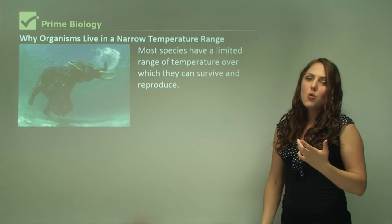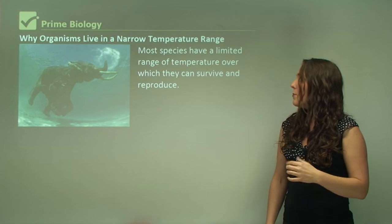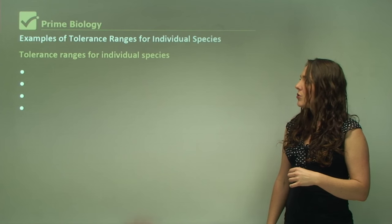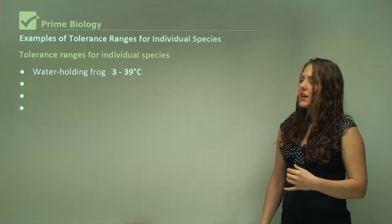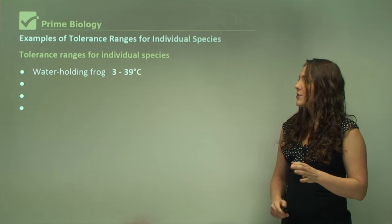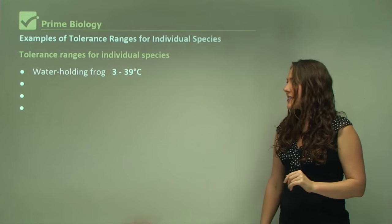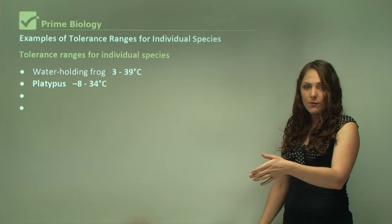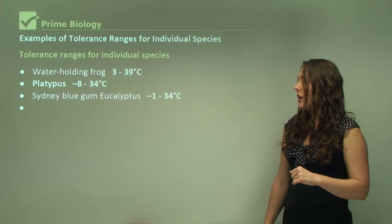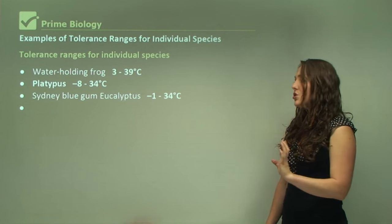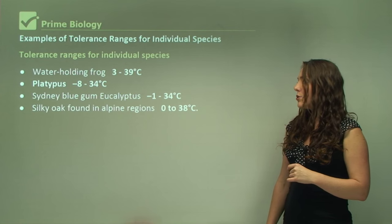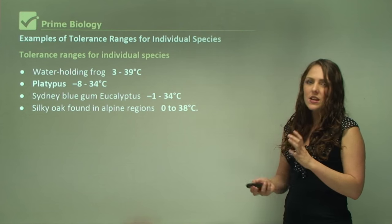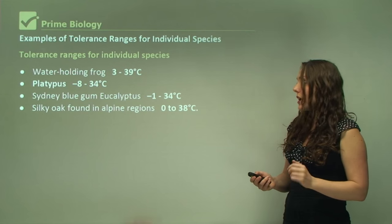Most species have a limited range of temperature over which they can survive and reproduce. Looking at tolerance ranges for individual species: the water-holding frog can survive from 3°C to 39°C; a platypus can survive from minus 8°C to plus 34°C; the Sydney blue gum eucalyptus can survive from minus 1°C to plus 34°C; and the silky oak found in alpine regions can live within 0°C to 38°C. Most of these fall within roughly a 40-degree temperature range.